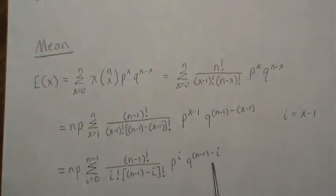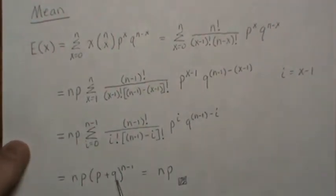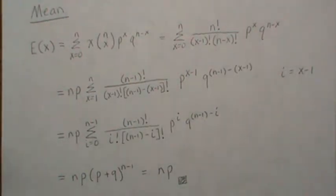So here we go from 0 to n minus 1, and this is the binomial expansion of this. And again, this is 1, 1 to a power is 1, so we're just left with np. So the mean is np.